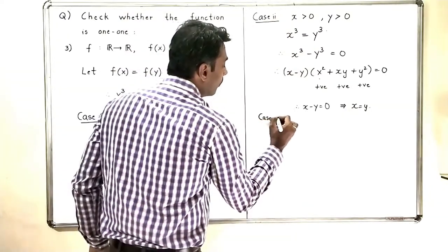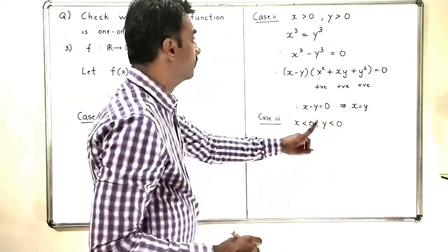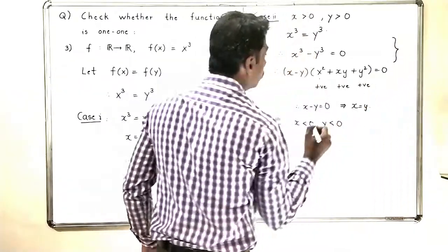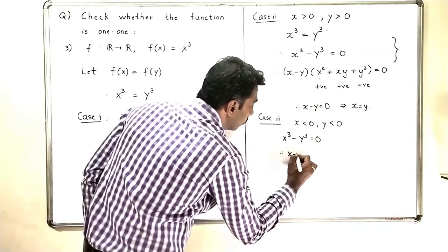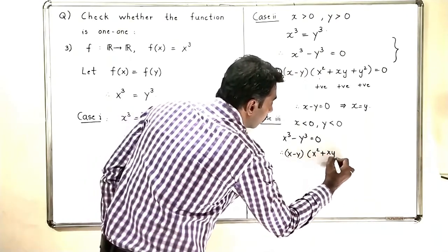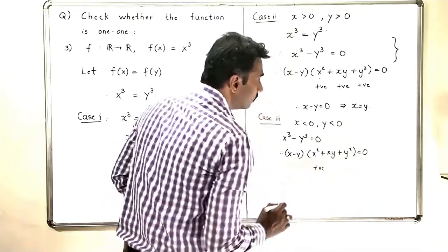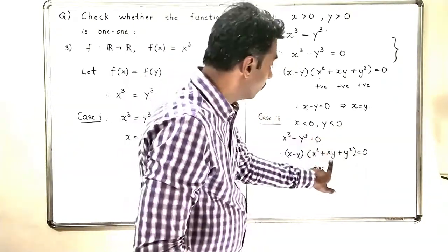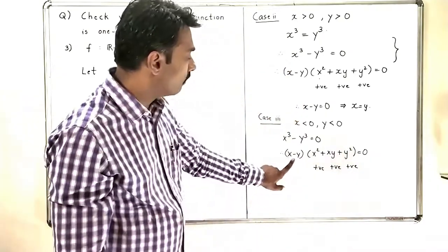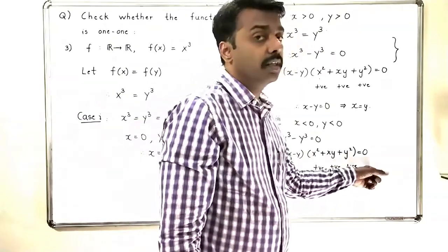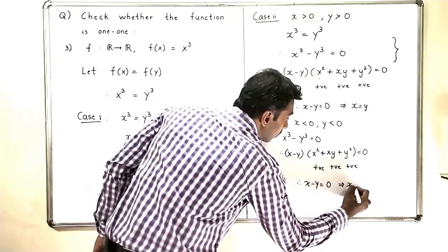In Case 3, I take both x and y negative. The same steps give x³ - y³ = 0, so (x - y)(x² + xy + y²) = 0. Since x is negative and y is negative, x² is positive, xy (product of two negatives) is positive, and y² is positive. So again x² + xy + y² is a positive number, which forces x - y = 0, giving x = y.